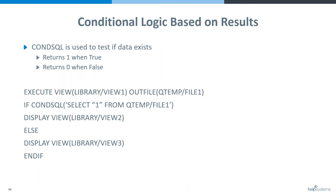The first thing we have to do is take our view — that is our control that determines what we do if there's records. In this case, that's our execute on that first line. We take view one and we say run this and build a file. And the reason I need to do that is because I need to run my condition SQL over that file.